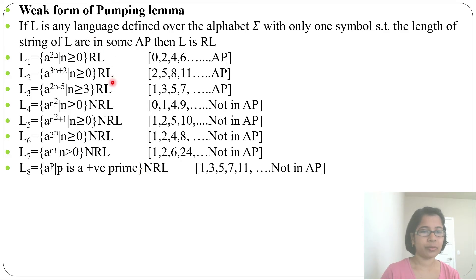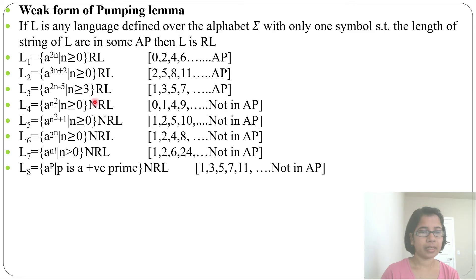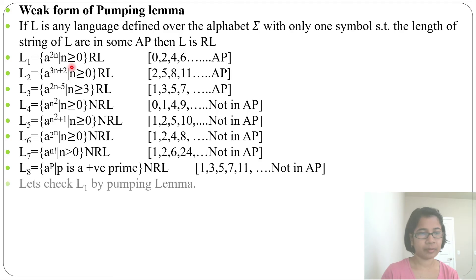So those whose length sequences are in AP are regular languages, while the others are non-regular and can be proven so by the pumping lemma. However, for specific cases like the AP-based languages, the pumping lemma may falsely prove them to be non-regular — which is why it is called the weak form. Let's verify this by checking L1 through the pumping lemma.